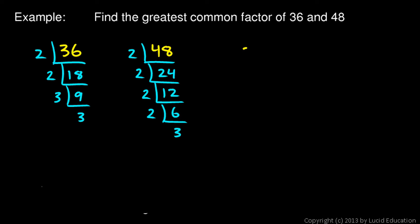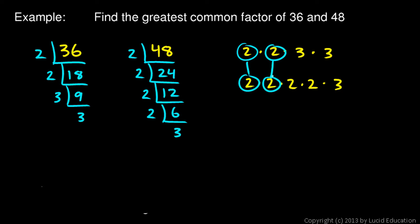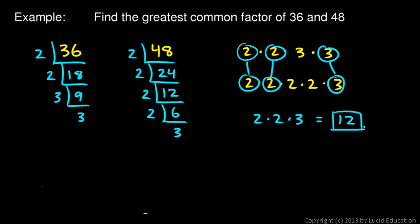Let's write each of those out. 36 is 2 times 2 times 3 times 3, and 48 has four 2's multiplied together times 3. Then we pair up: this 2 pairs with this 2, and this 2 pairs with this 2. We can't pair the remaining 2's because they're already taken, so those two extra 2's get left out. But this 3 can pair up with one of these 3's. That's all the pairing we can do, so the answer is 2 times 2 times 3, which is 12. 12 is a factor of 36 and a factor of 48, and it is the greatest common factor.